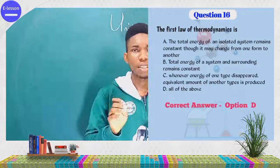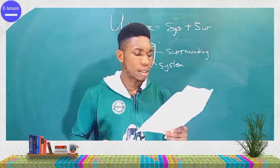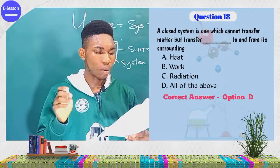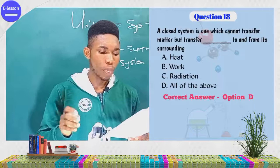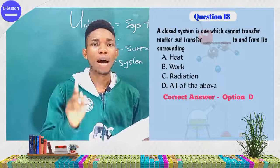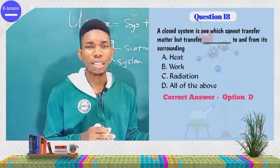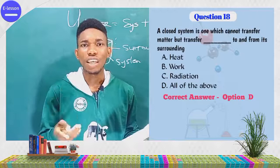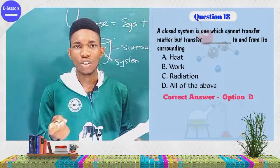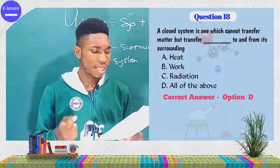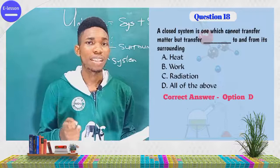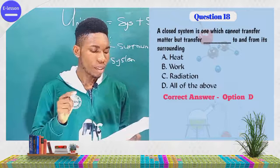The next question: a closed system is one that cannot transfer matter but can transfer what to and from its surrounding? As explained, the closed system cannot transfer matter but can transfer energy in the form of heat, work, and radiation. The options are A) heat, B) work, C) radiation, D) all of the above. The correct answer is D: all of the above.